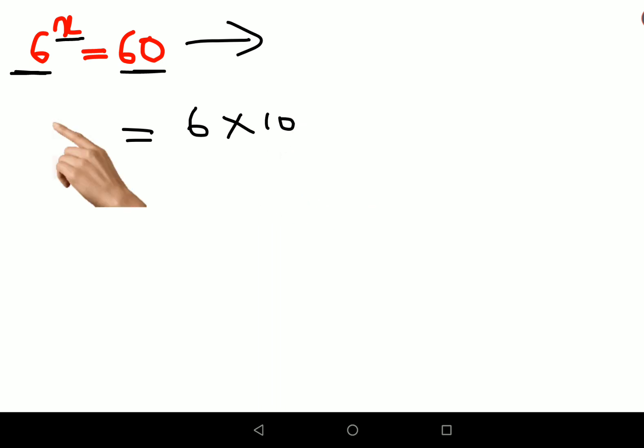So this would have been 6 raised to x. Now in order to find the value of x, all you have to do is just take log on both sides.